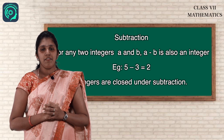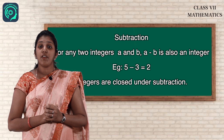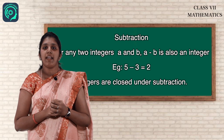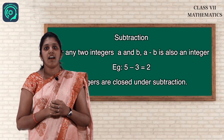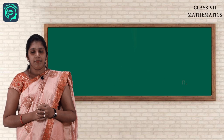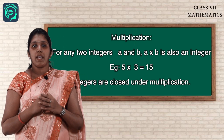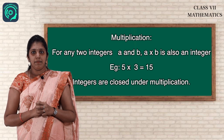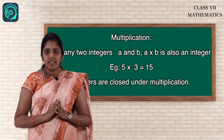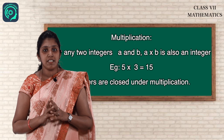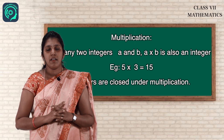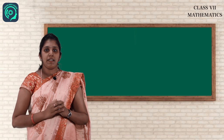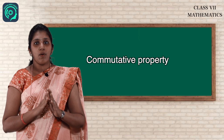For subtraction: for any two integers A and B, A minus B is also an integer. For example, consider 5 and 3. Since both are integers, 5 minus 3 equals 2, which is also an integer. So integers are closed under subtraction. For multiplication: for any two integers A and B, A into B is also an integer. Example: 5 into 3 equals 15, which is also an integer. So integers are closed under multiplication.